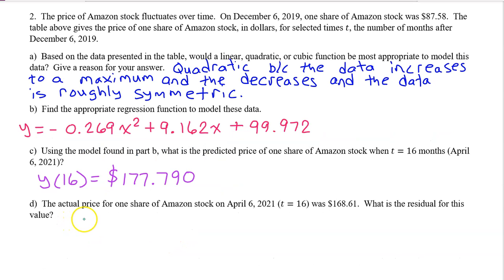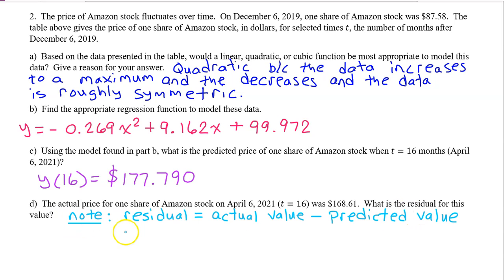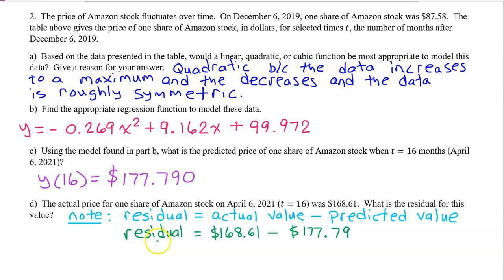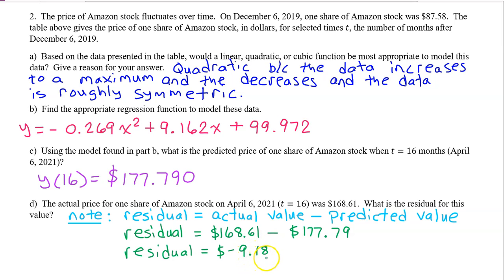Part D. The actual price for one share of Amazon stock on April 6th, 2021, T equals 16, was $168.61. What is the residual for this value? The residual value is the actual value minus the predicted value. So in this case, the residual is $168.61 minus $177.79, which equals negative $9.18. The fact that this number is negative indicates that the regression model overestimated the value of the Amazon stock at T equals 16.